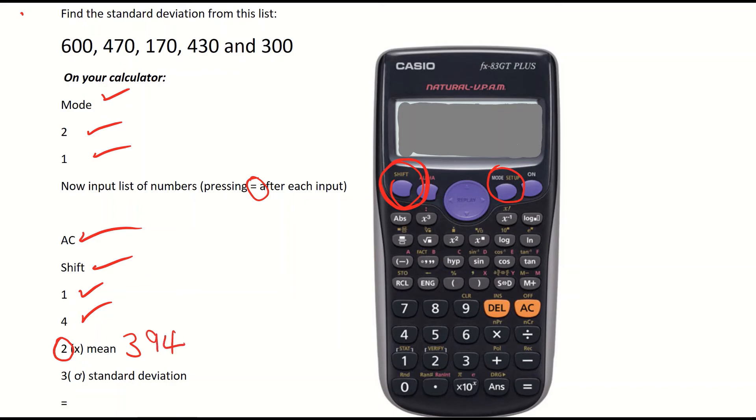If you now want to find your standard deviation, just clear your calculator by pressing the on button. You're back to 0.